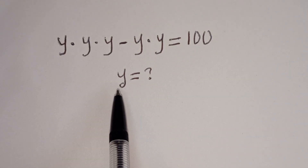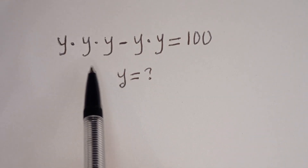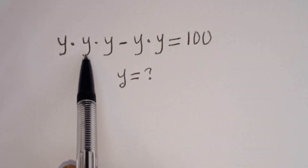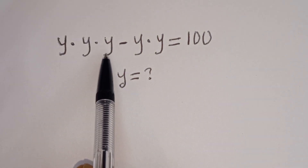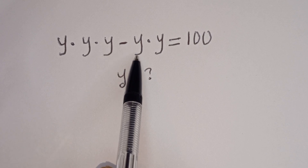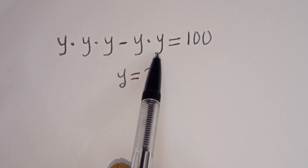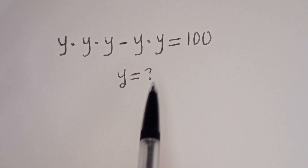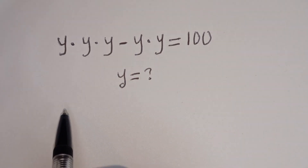Hello. How to solve for y in this equation? y multiplied by y multiplied by y, minus y multiplied by y, is equal to 100.